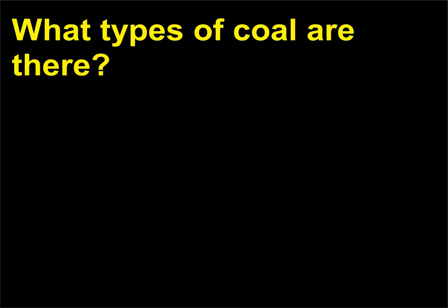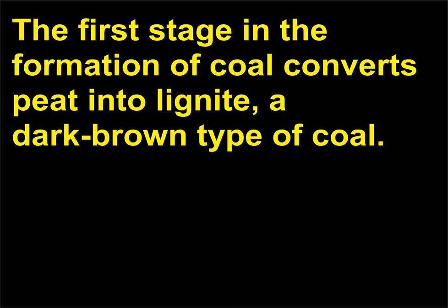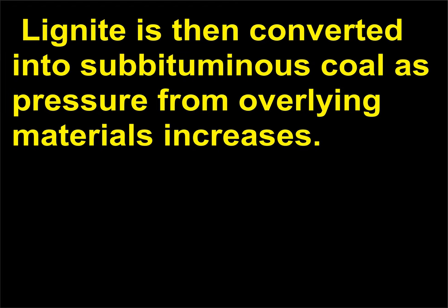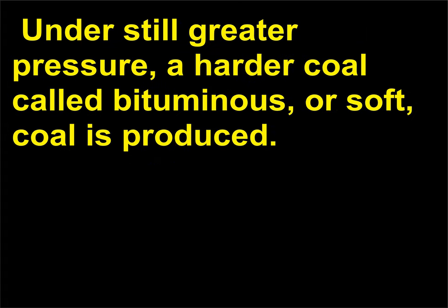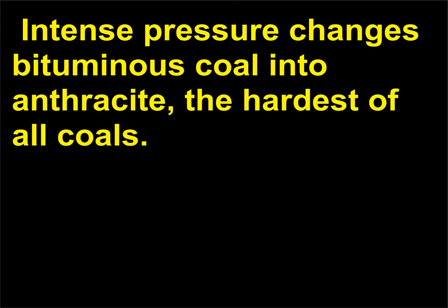What types of coal are there? The first stage in the formation of coal converts peat into lignite, a dark brown type of coal. Lignite is then converted into subbituminous coal as pressure from overlying materials increases. Under still greater pressure, a harder coal called bituminous, or soft, coal is produced. Intense pressure changes bituminous coal into anthracite, the hardest of all coals.